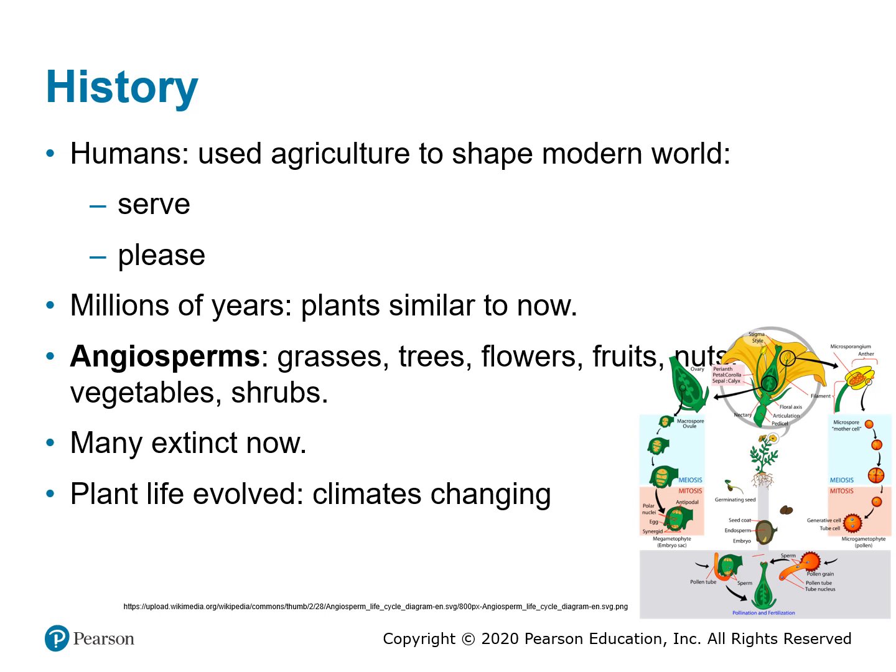In terms of the history of plant science, humans have used agriculture or horticulture to shape the modern world. Millions of years ago, most plants were similar to what they are now — many were angiosperms, which include grasses, trees, flowers, fruits, nuts, vegetables, and shrubs. Through time, plant life evolved partly as a result of climate changes into the plants we know and grow today.